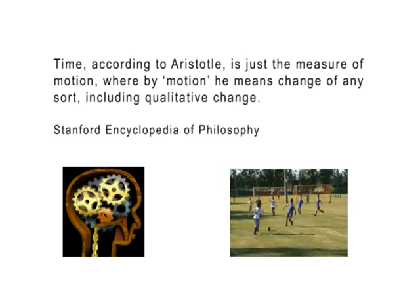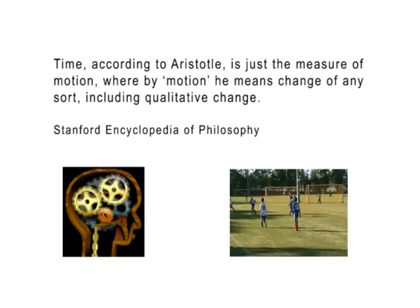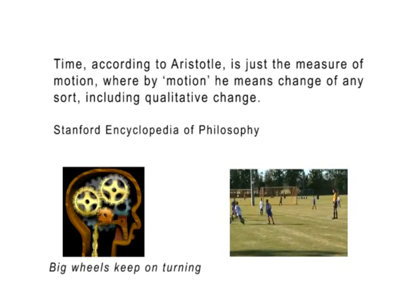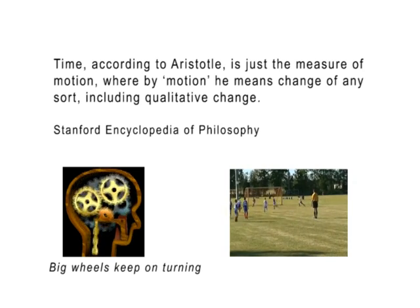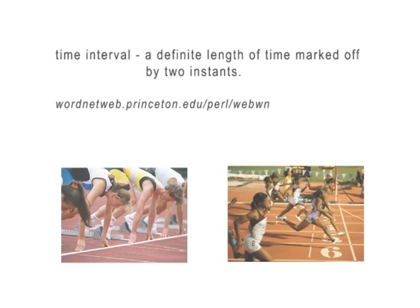Motion is defined as any change in position, velocity, or quality. This includes internal cognitive change and external environmental change. These changes occur over intervals. Motion cannot happen at a single point.